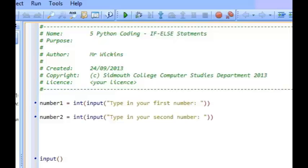What we're going to do is type in two numbers and get the program to decide which one's the biggest number. At the moment you can see I've asked the user to type in a first number, converted their input into an integer data type and stored that in number1. Done the same for a second number, converted it to an integer and stored that in a variable called number2.